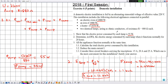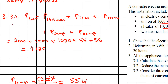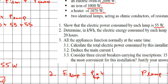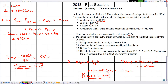P total equals P of the electric oven plus P of the iron plus P of the heater plus P of the two lamps: 2000 plus 1000 plus 1070 plus 55 plus 55. Plugging this into the calculator gives 4180. All powers are in watts, so P total equals 4180 watts. We must be careful that the lamp powers are also expressed in watts, not kilowatts.